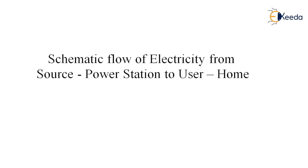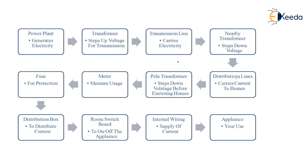Now let's look at the schematic flow of electricity from the source — our power station — to the user, our home. The first stage is the power plant where electricity is generated. It then goes to a transformer that steps up the voltage for transmission, increasing the force for carrying the generated current. From there it goes to the transmission lines which actually carry the current.